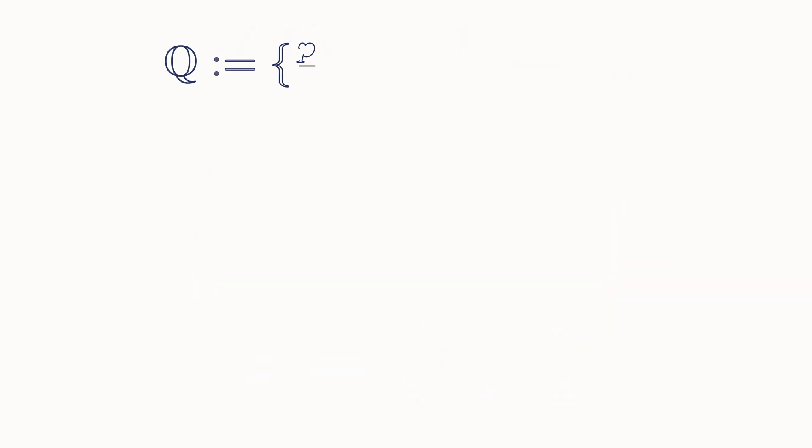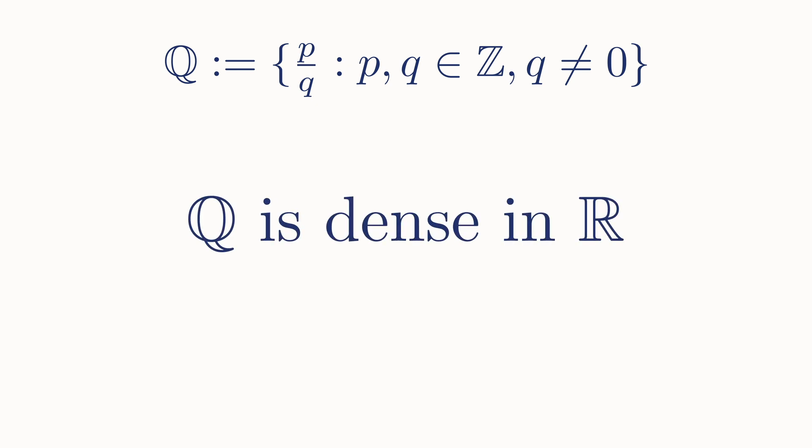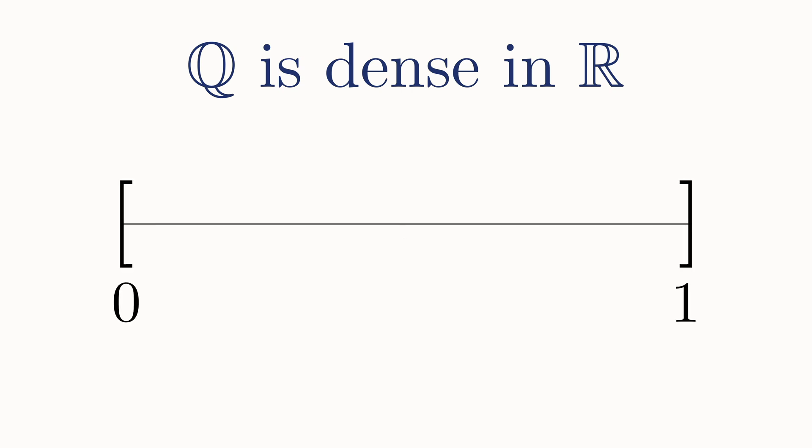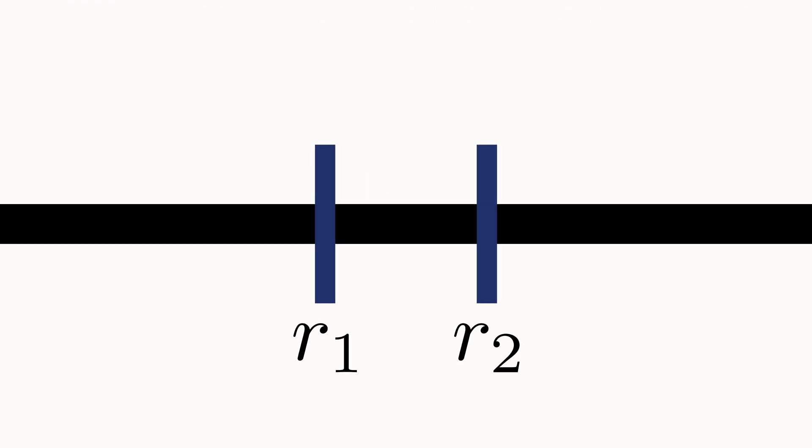Before doing any calculations with measures, I would like to point out an interesting property of the set of rational numbers. That is, they are dense in the real numbers. This means that for any two real numbers you pick, no matter how close they are to each other, you can always find a rational number in between them.